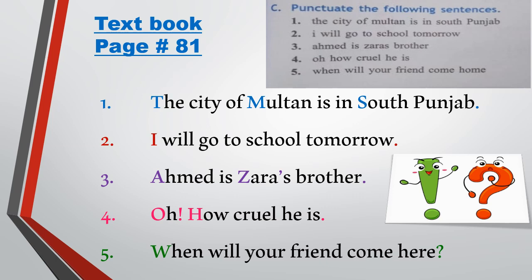The fifth sentence is: 'When will your friend come here?' The first letter W is capital. At the end of the sentence, we put a question mark because a question is being asked. So do it with your colors.